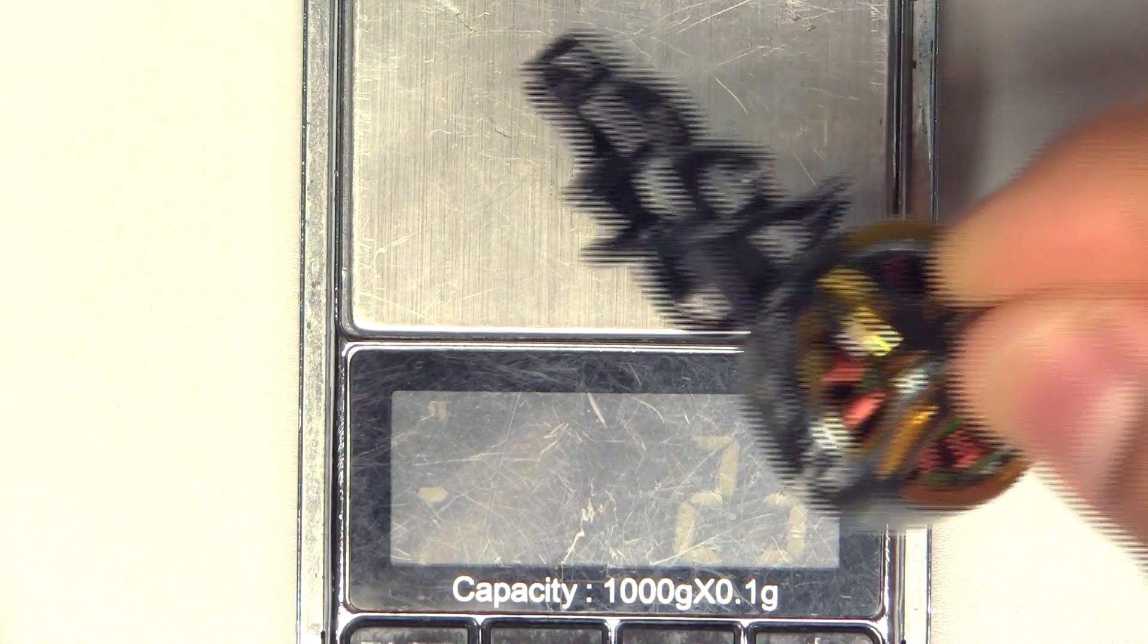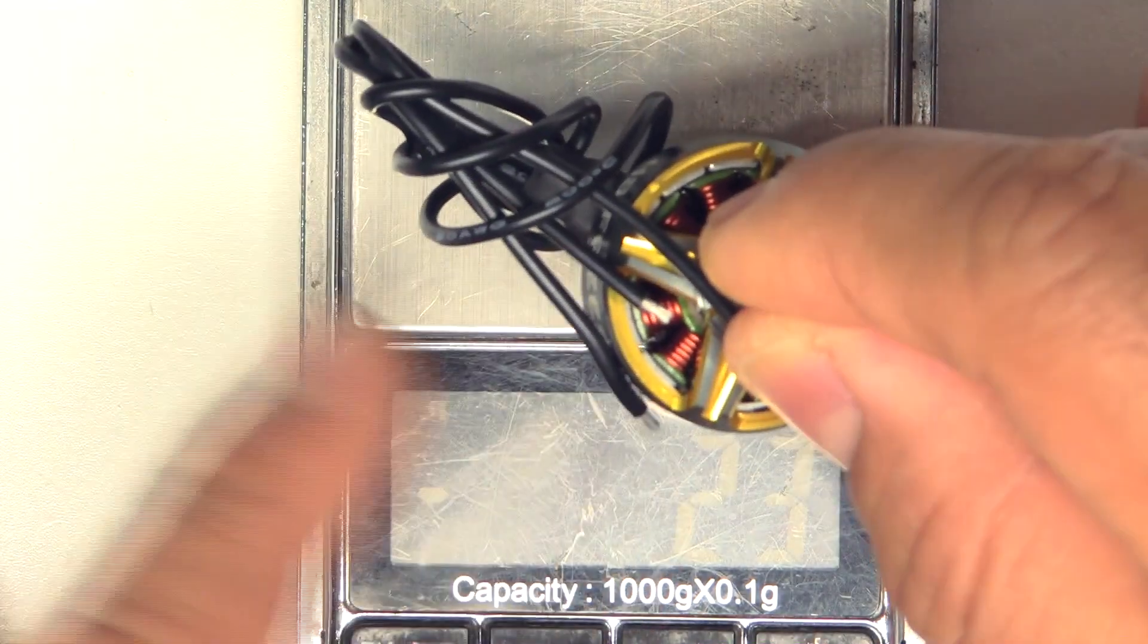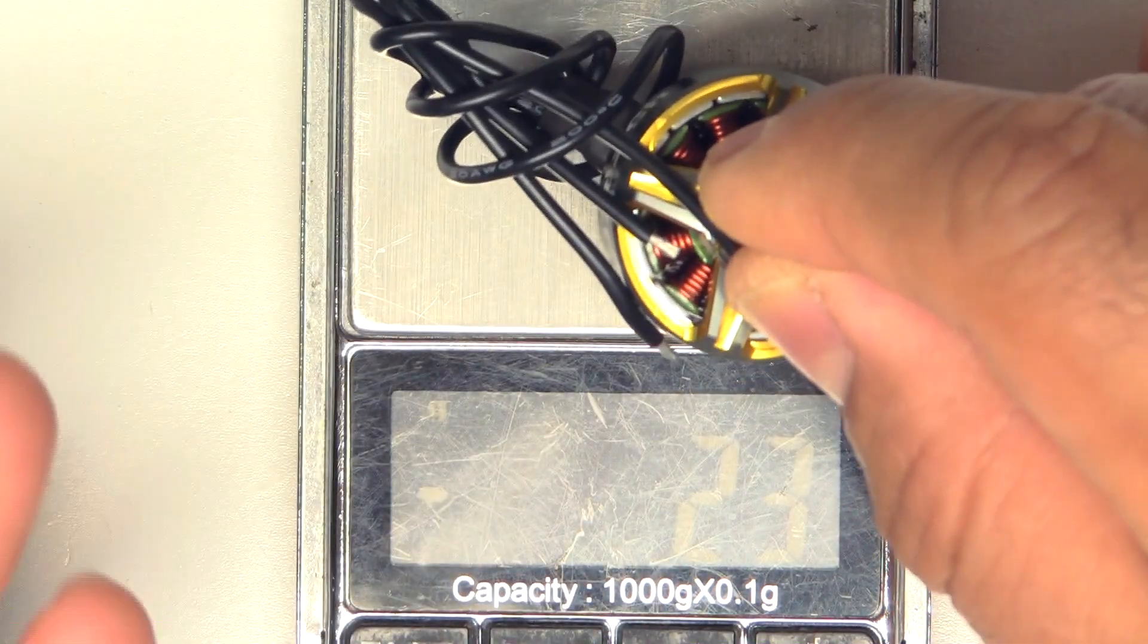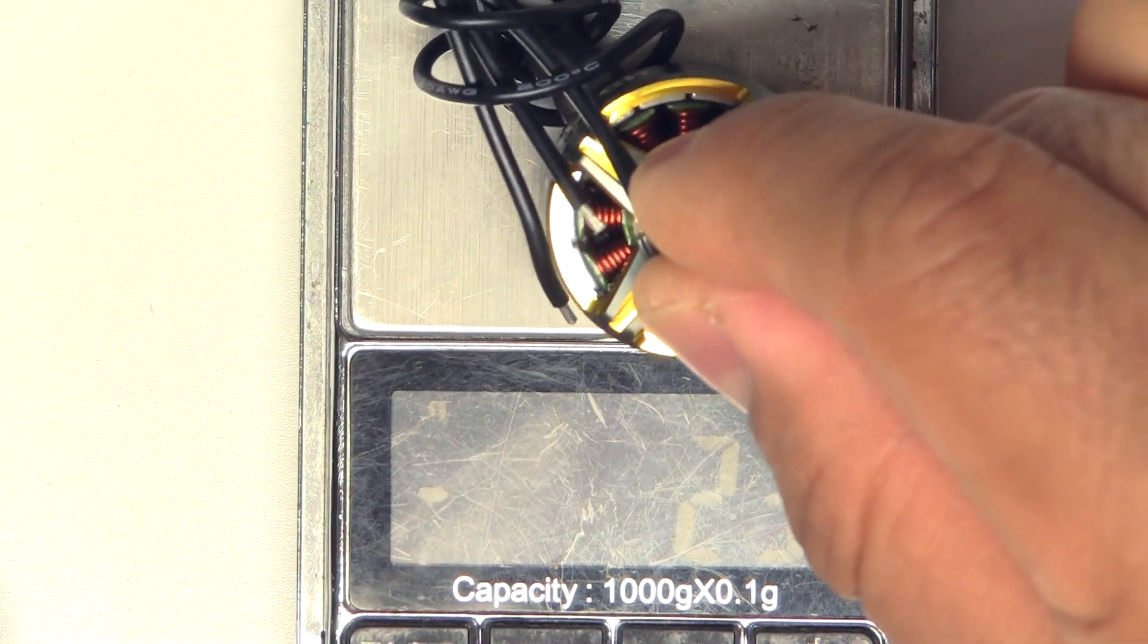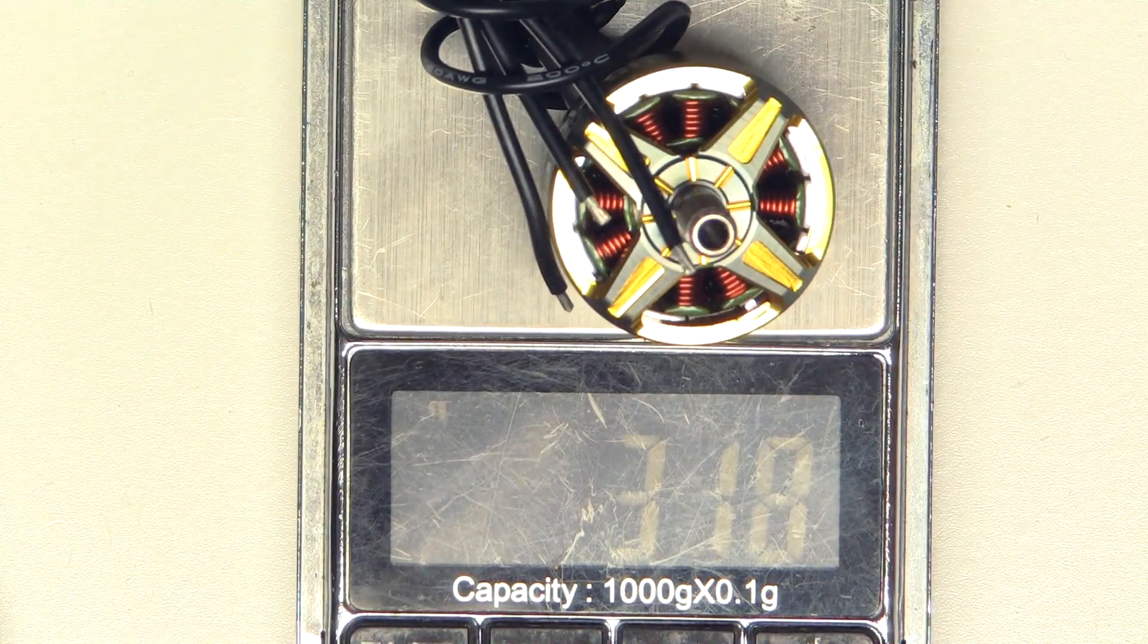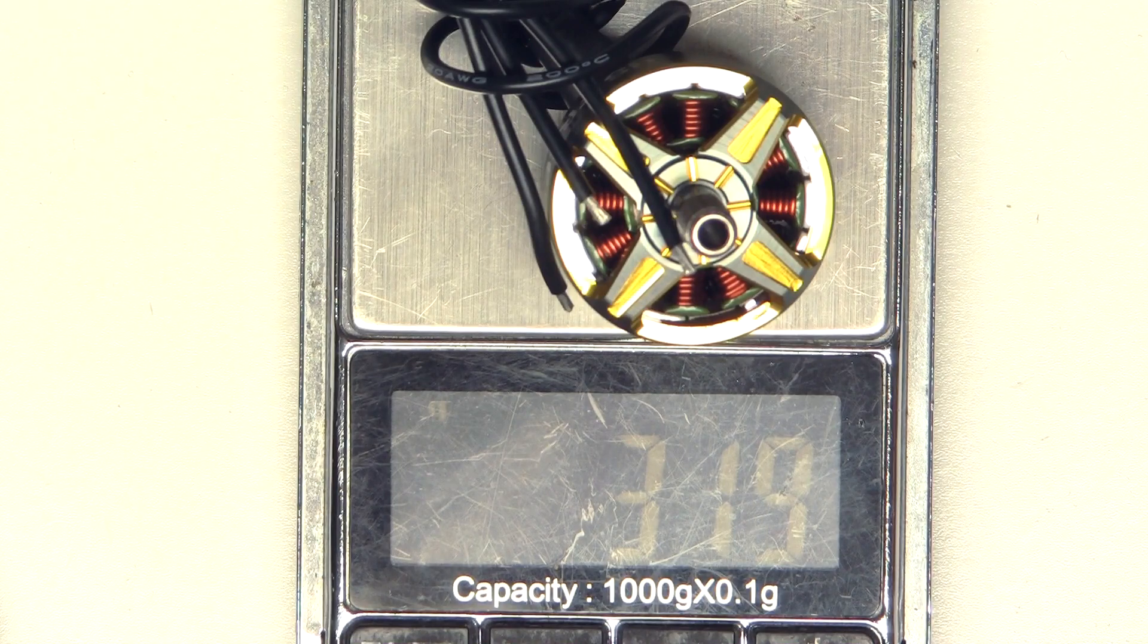And we'll see now what the motor weighs with an equivalent 50mm worth of wire, which is what I usually do for most motors. So that's about 31.9, 32 grams.